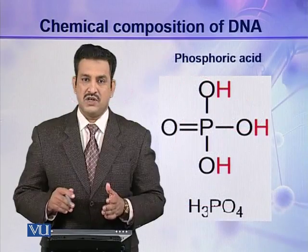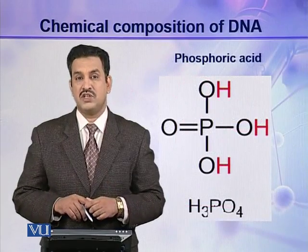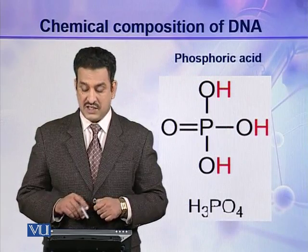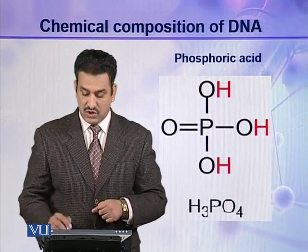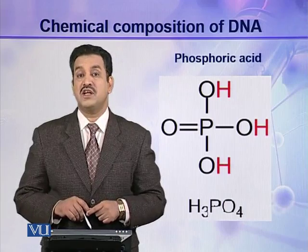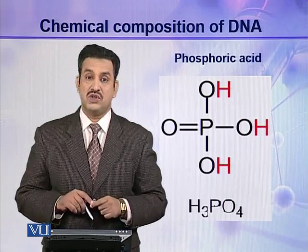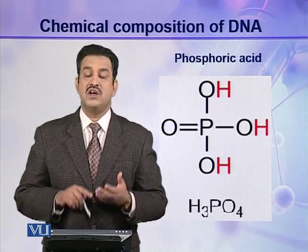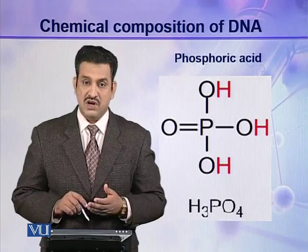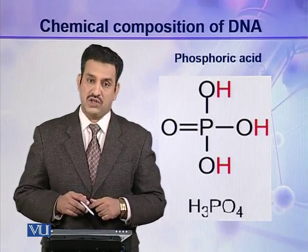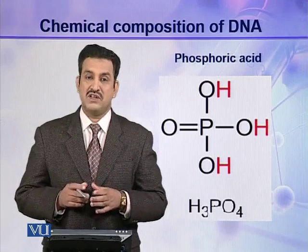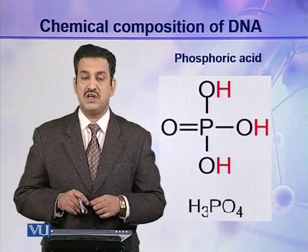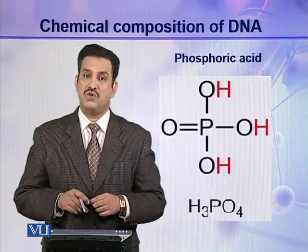The third component present in a deoxyribonucleotide is phosphoric acid. Phosphoric acid has three hydroxyl groups, so it can form three bonds with other molecules. All three components — deoxyribose sugar, a nitrogenous base, and a phosphoric acid — combine together to make a deoxyribonucleotide, which is the building block of the DNA molecule.